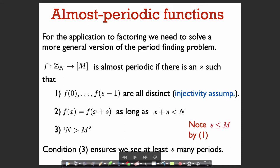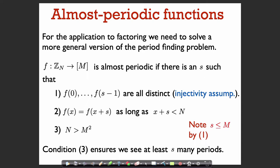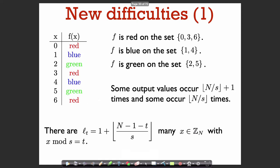Because we have this weaker condition, we need an additional condition: n is strictly larger than m squared. And note that s is at most m, because the size of the range is m and all of f of 0 through f of s minus 1 are distinct. This condition is telling us that we see at least s many periods. This problem becomes hard quantumly if we only see a couple of periods of the function. We need to see a sufficient number of periods in order to learn s by a quantum algorithm. This suffices for the application to integer factorization.